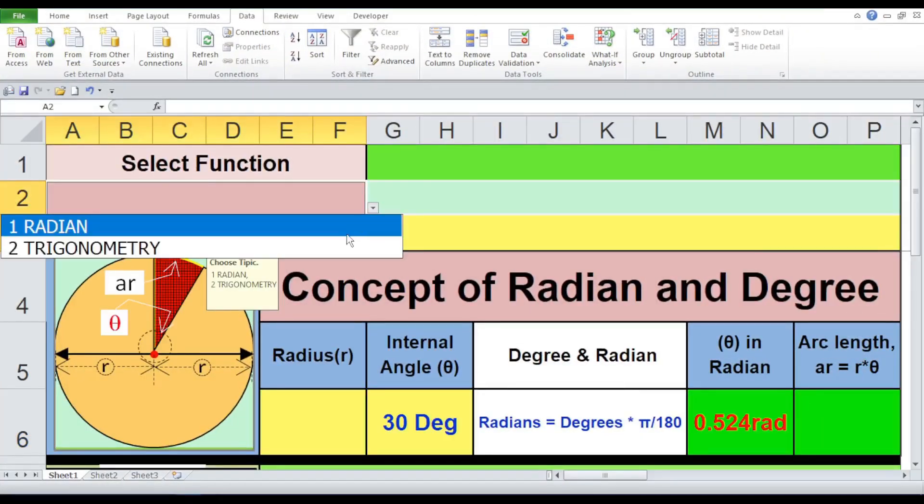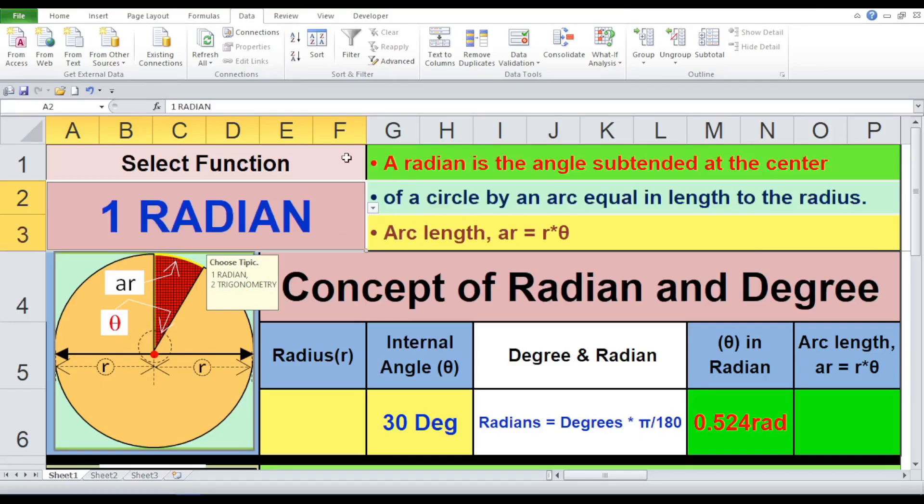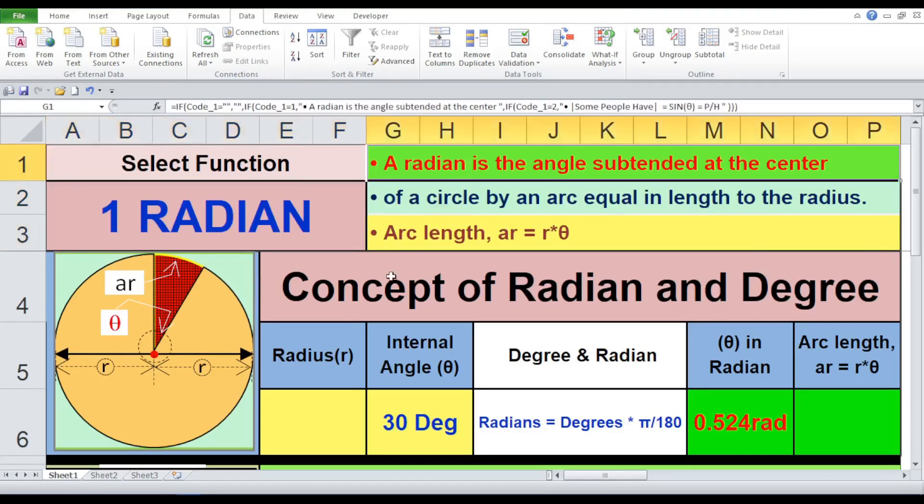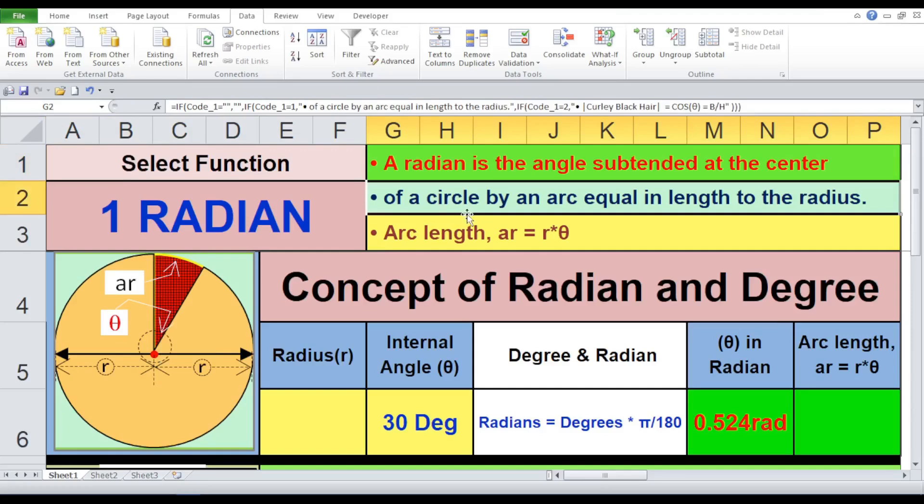All right, let's dive deeper. When we select radians from the drop-down, we're essentially defining a unit of angle measurement. A radian is a specific angle, visualized as the angle subtended at the center of a circle by an arc equal in length to the radius. Look at the circle diagram. The red arc represents this angle. The length of this arc, ar, is related to the radius, r, and the internal angle, theta, by the formula ar equals r into theta.